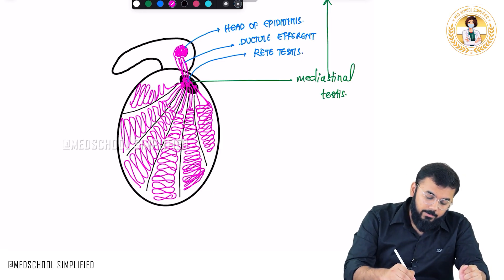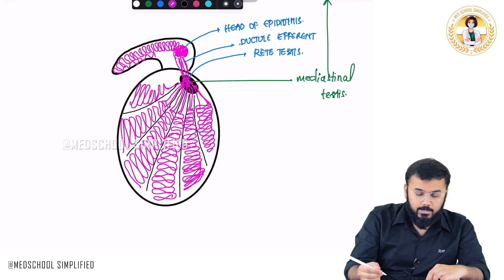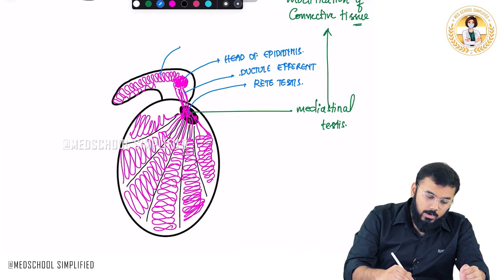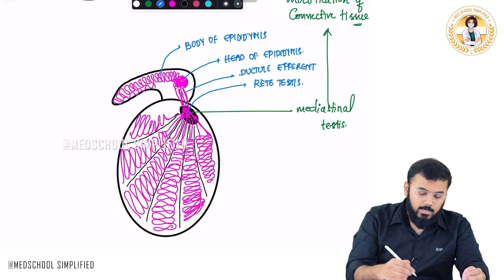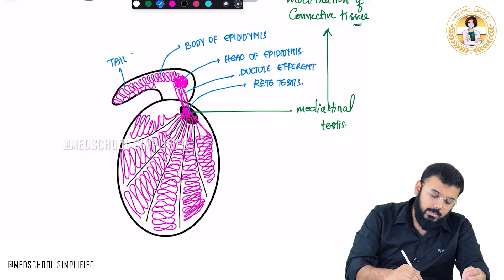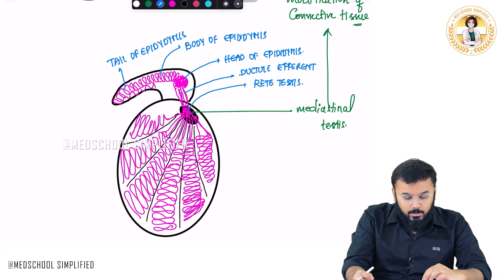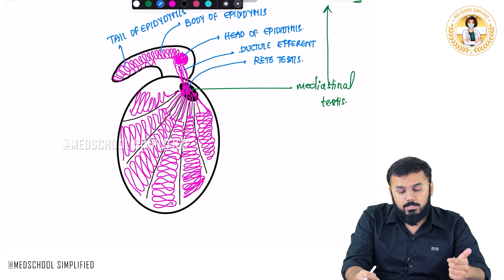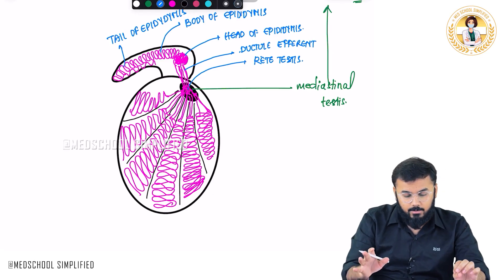From the head of epididymis, the remaining part of the epididymis comes out. This part is called as the body of epididymis, and this particular part is called as the tail of epididymis. So the structures are: head of epididymis, then body, then tail of epididymis.